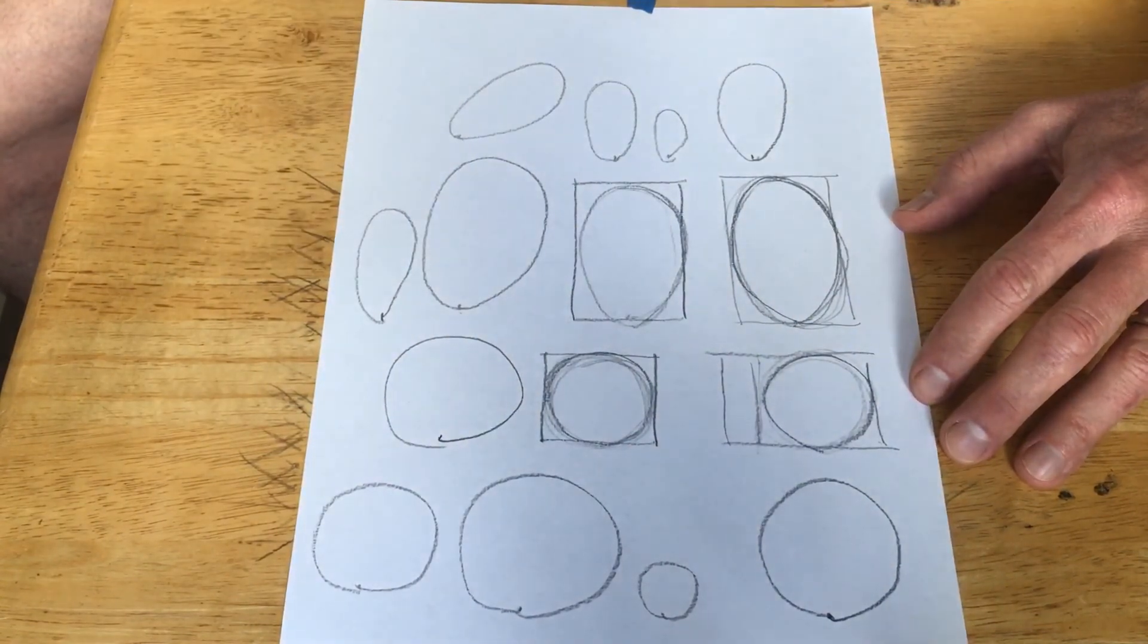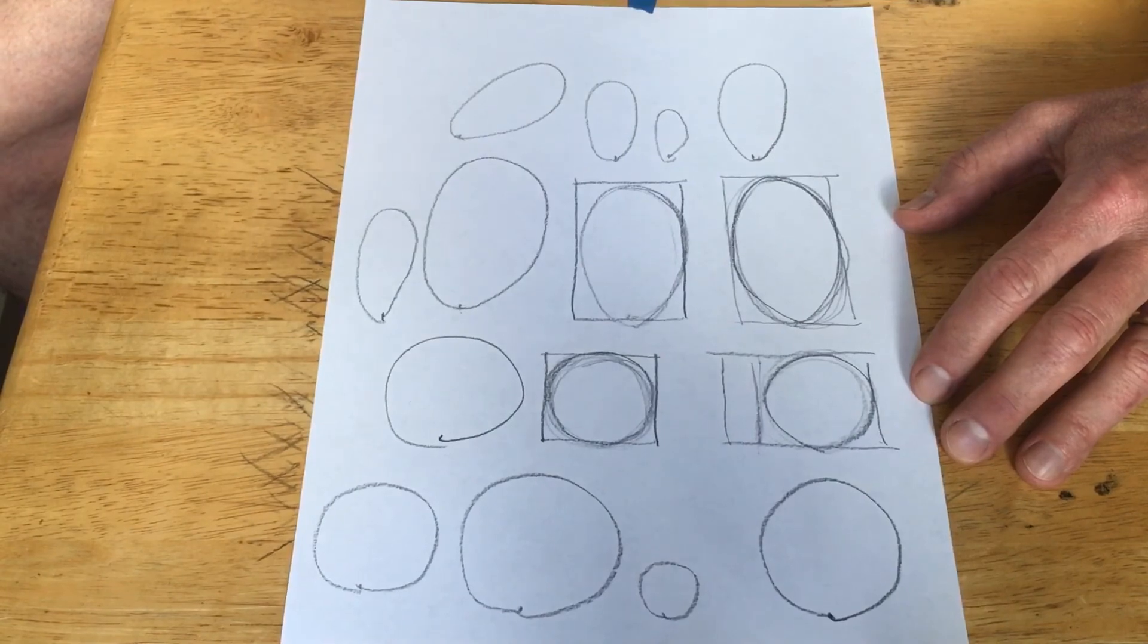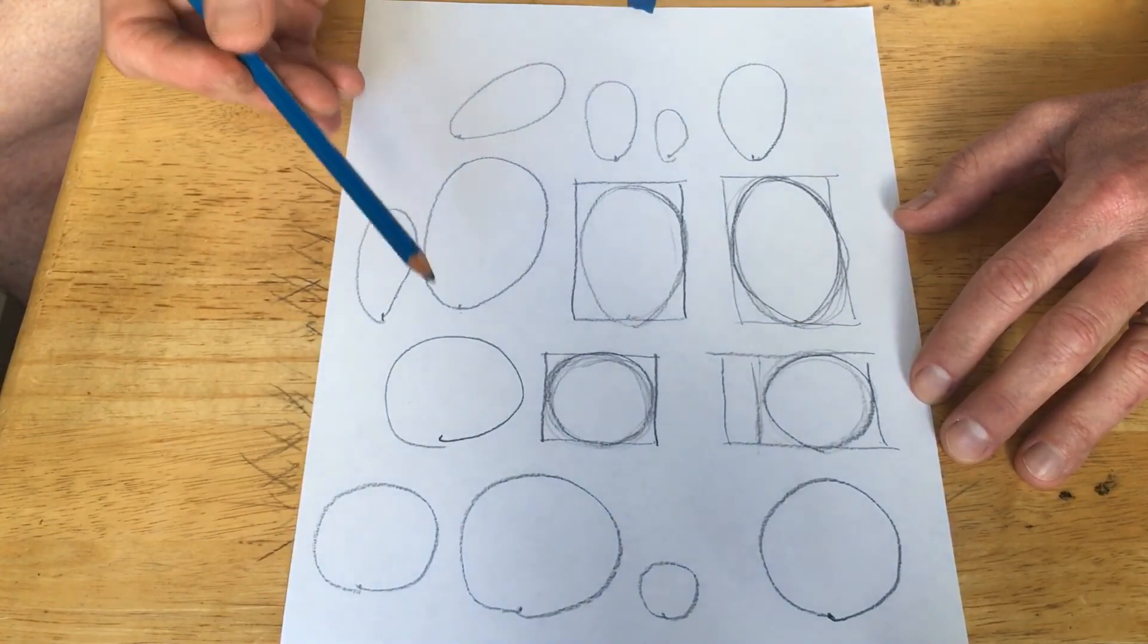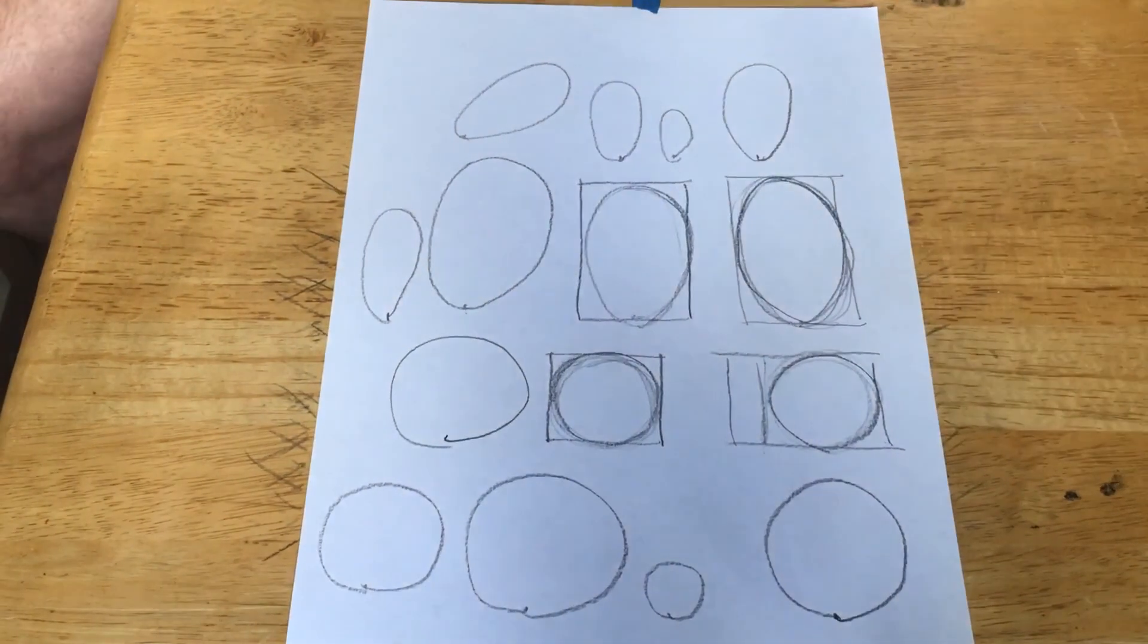Ovals come in many shapes. When we go further into practicing our lines, into shapes, and shapes make objects. Okay? Thanks a lot, guys.